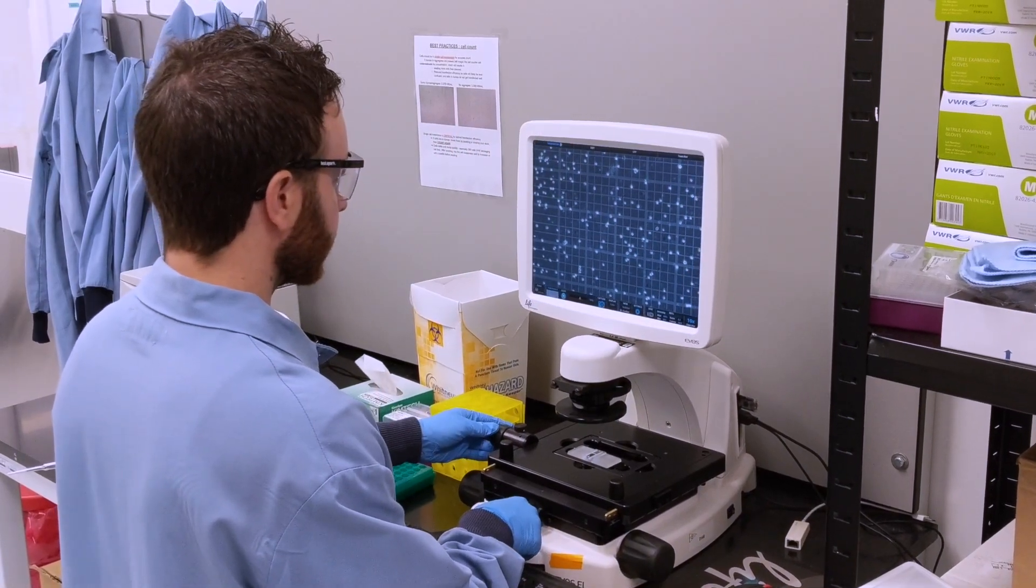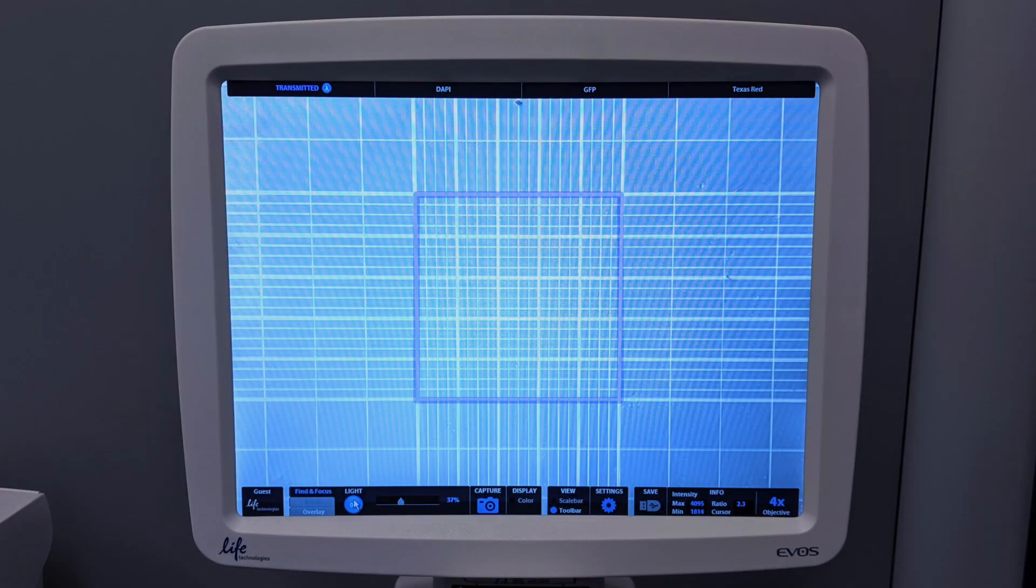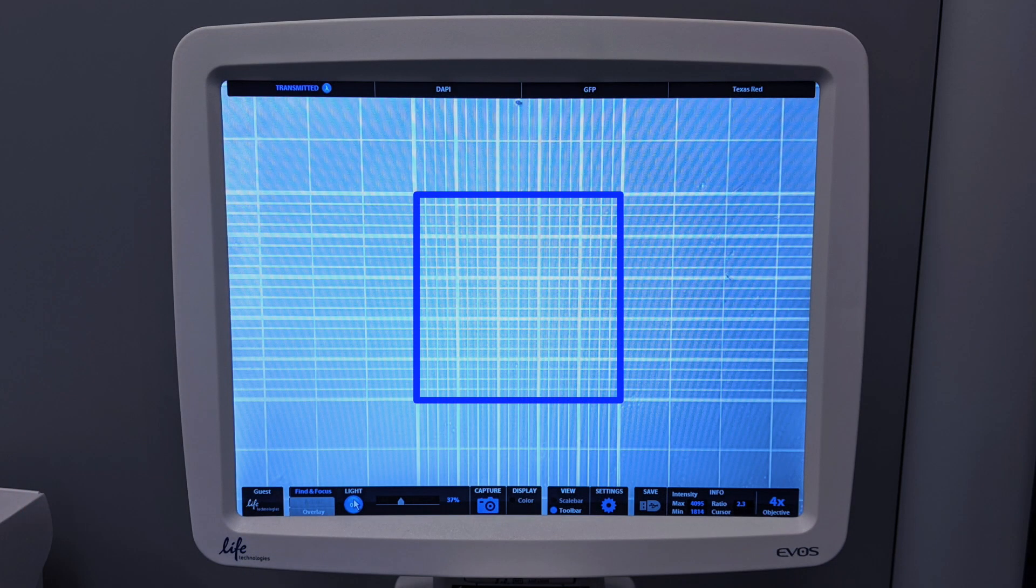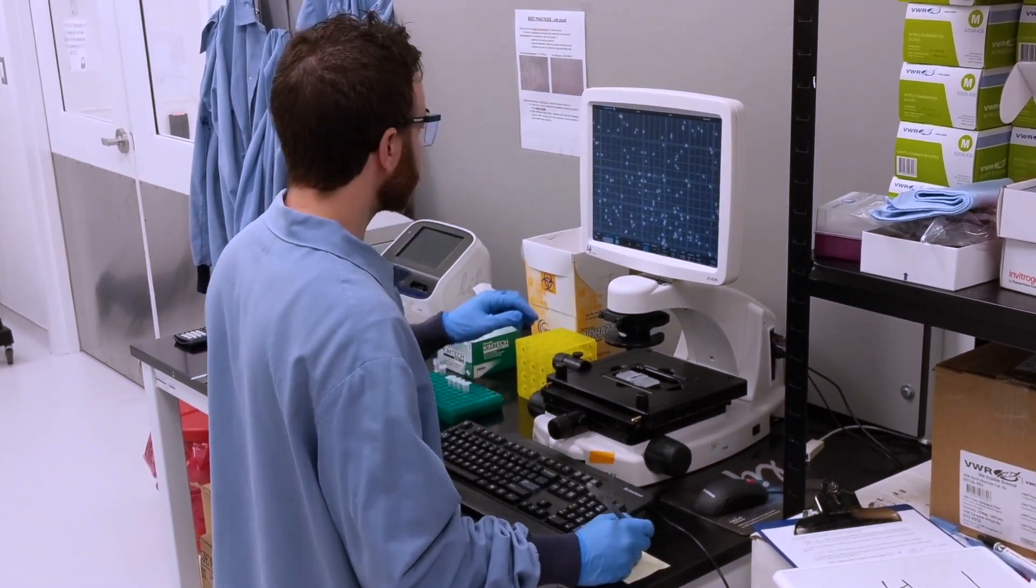To begin counting, choose a square and move the hemocytometer such that all four sides of the square are within your field of view. Now you may begin counting your cells manually or with the help of a counting device.